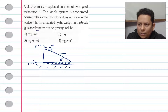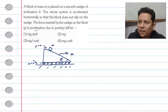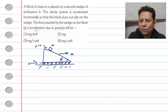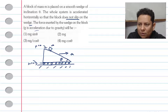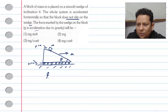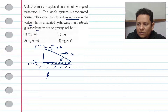Here we have the concept of pseudo force. The whole system is accelerated horizontally so that the block does not slip on the wedge. This means both the block and the wedge have the same acceleration in the same direction from the ground frame.